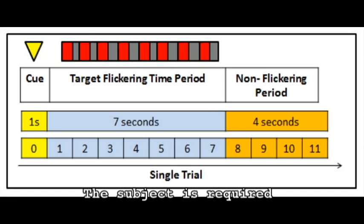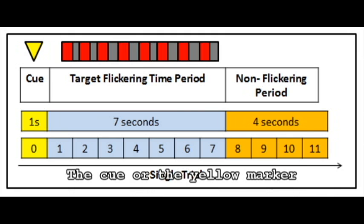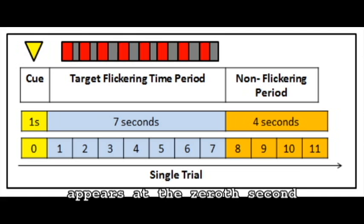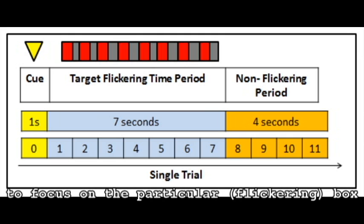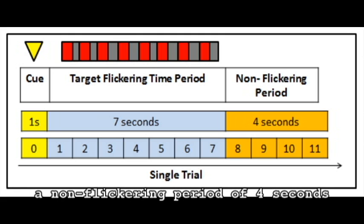The subject is required to undergo a training session that follows a protocol as shown here. The Q or the yellow marker appears at the 0th second. Following this is a flickering time period of 7 seconds during which the subject has to focus on the particular box. This is followed by a non-flickering period of 4 seconds.